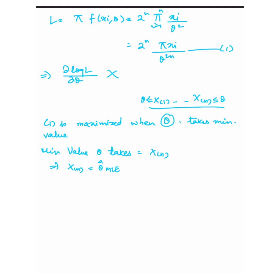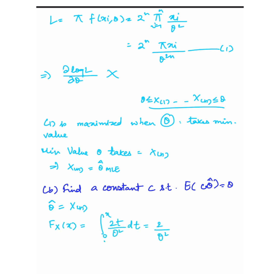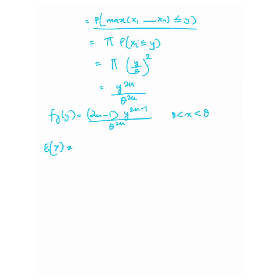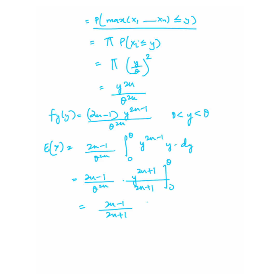Let's level up the question: find a constant c such that the expected value of c times theta-hat equals theta, where theta-hat is the MLE. We find the distribution of the nth order statistic y(n). The CDF is x squared upon theta squared. The pdf of y(n) is 2n times y to the power 2n minus 1 upon theta to the power 2n. Finding the expectation of y(n) gives E[y] equals 2n times theta upon 2n plus 1. Hence, (2n+1)/(2n) times y(n) is an unbiased estimator of theta.